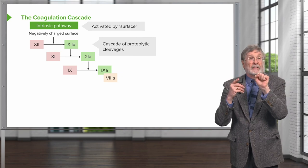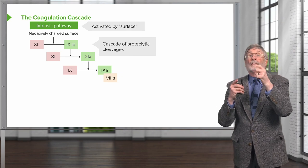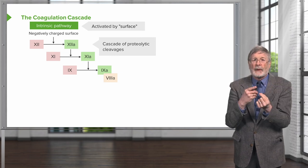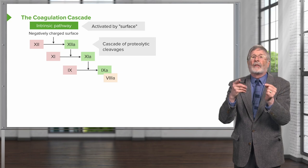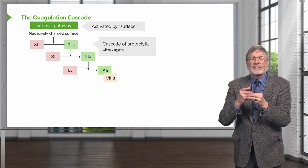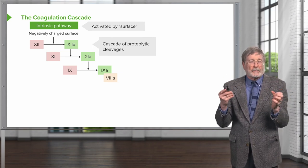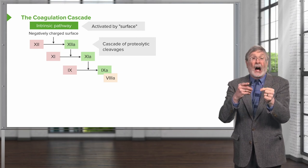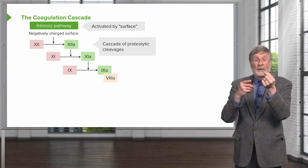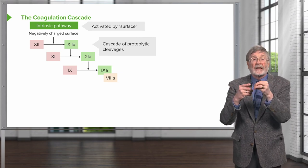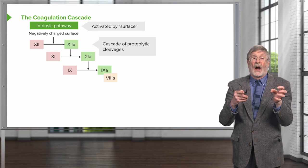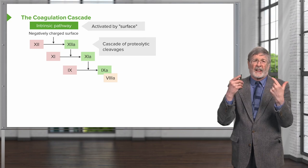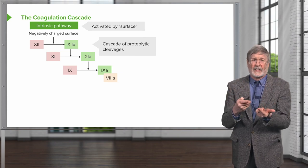So we have exposed the surface and activated 12 to 12a. Because of its conformational change, it will start proteolytically cleaving other factors. This allows us to get an amplification of the process. Once we've made the protease 12a, it can chew up a lot of factor 11 to make 11a. And once we've made a little bit of 11a, it can chew up a lot of 9 to make 9a. We get a cascade, an amplification. That's one of the key features of the coagulation cascade.